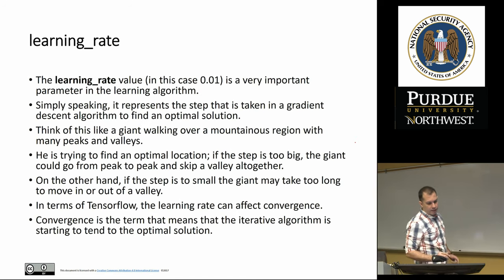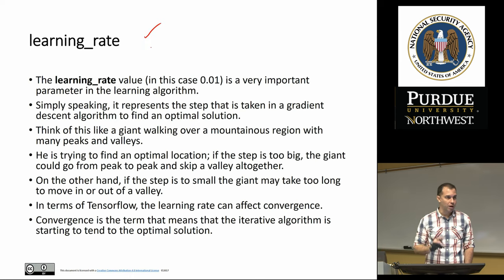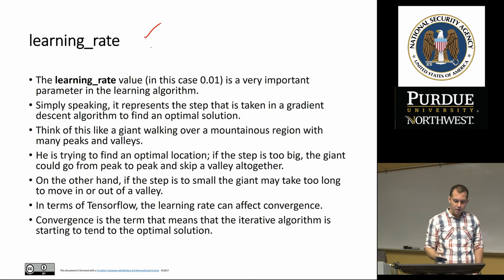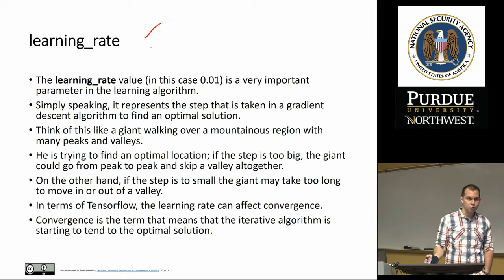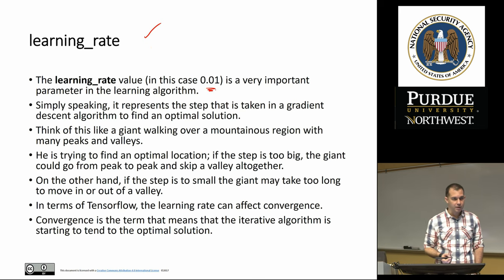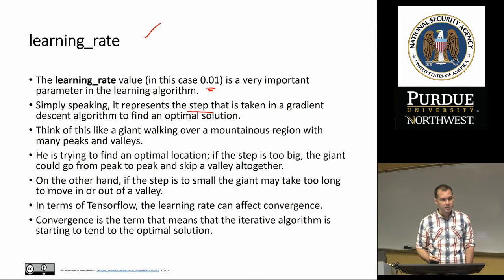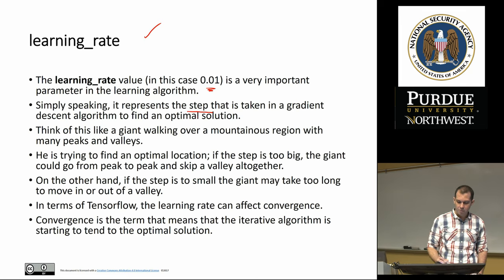Learning rate is another variable you want to define in your deep learning algorithm. It has to do with optimization. The learning rate value is usually something like 0.01, although it can also be a function. Simply speaking, it represents the step that is taken in a gradient descent algorithm to find an optimal solution.